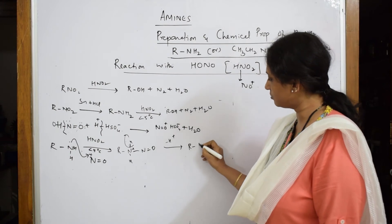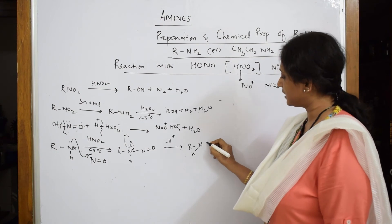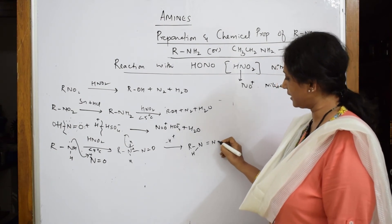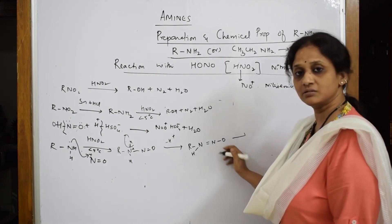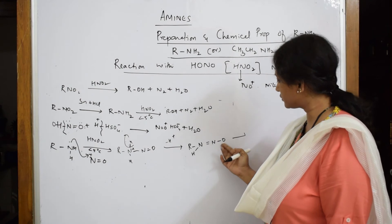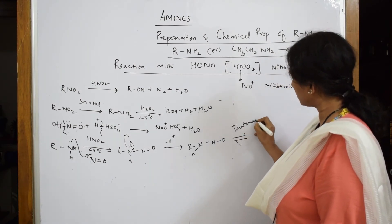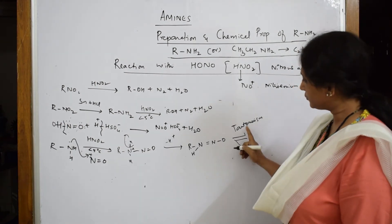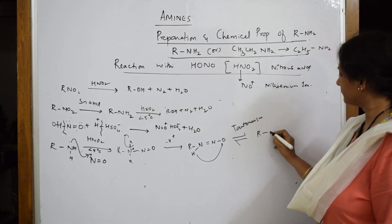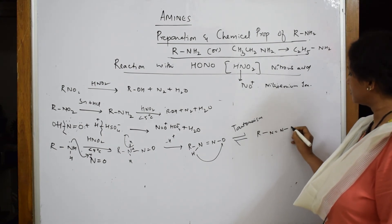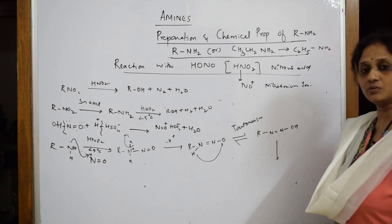What is going to happen? It's going to form a complex like this: R-NH=N-OH. Now this is your enol. This keto group and this enol are going to show tautomerism. During tautomerism, one hydrogen from here shifts here. So what do I get? I get R-N=N-OH, simple.